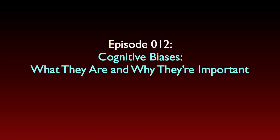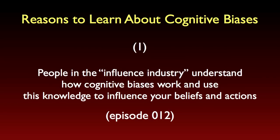The specific example I used involved a government advisor who uses the anchoring effect to help influence the public's perceptions of the severity of a military strike. This example illustrated one of the reasons why learning about cognitive biases is important for critical thinking. More and more people in the influence industry, whose job it is to influence what you believe and how you act, are coming to understand how cognitive biases work and are using this knowledge to plan and execute their influence campaigns. So if one of our goals as critical thinkers is to reduce our susceptibility to this kind of manipulation, then we need to learn something about cognitive biases and how they're actually used to influence our behavior. This is analogous to the rationale for learning about logical fallacies as part of logical self-defense.